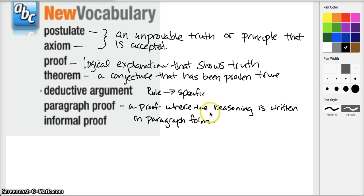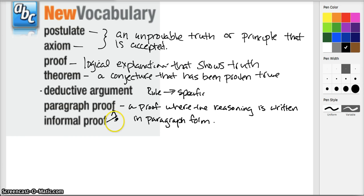A proof where the reasoning is written in paragraph form. Finally, we've got the term informal proof, which is just another name for paragraph proof. It's not that it's not logical enough — it's called informal because we'll be talking about another kind of proof called a two-column proof later on, and this is the informal version of that. With that in mind, let's get to some examples.